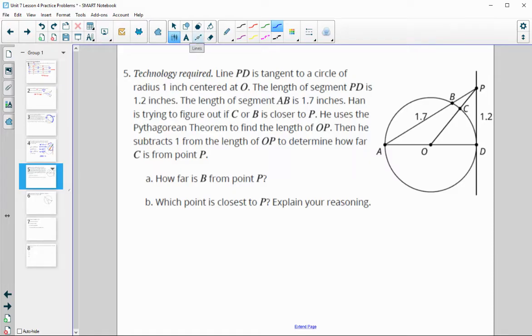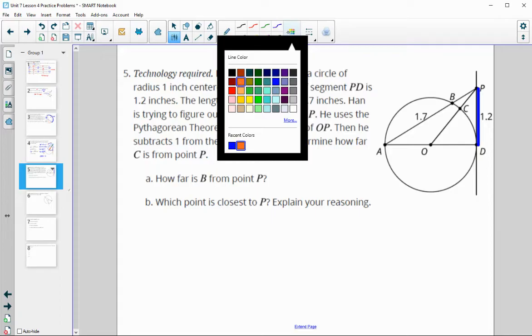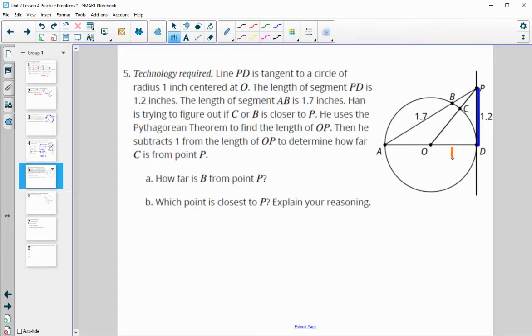Number 5, line PD is tangent to the circle. So PD here is tangent to the circle. The length of PD is 1.2 inches, which they have labeled. They also told us that the radius of this circle is 1. So we know this length is 1, this OC is 1, and OA is 1. The length of AB is 1.7.